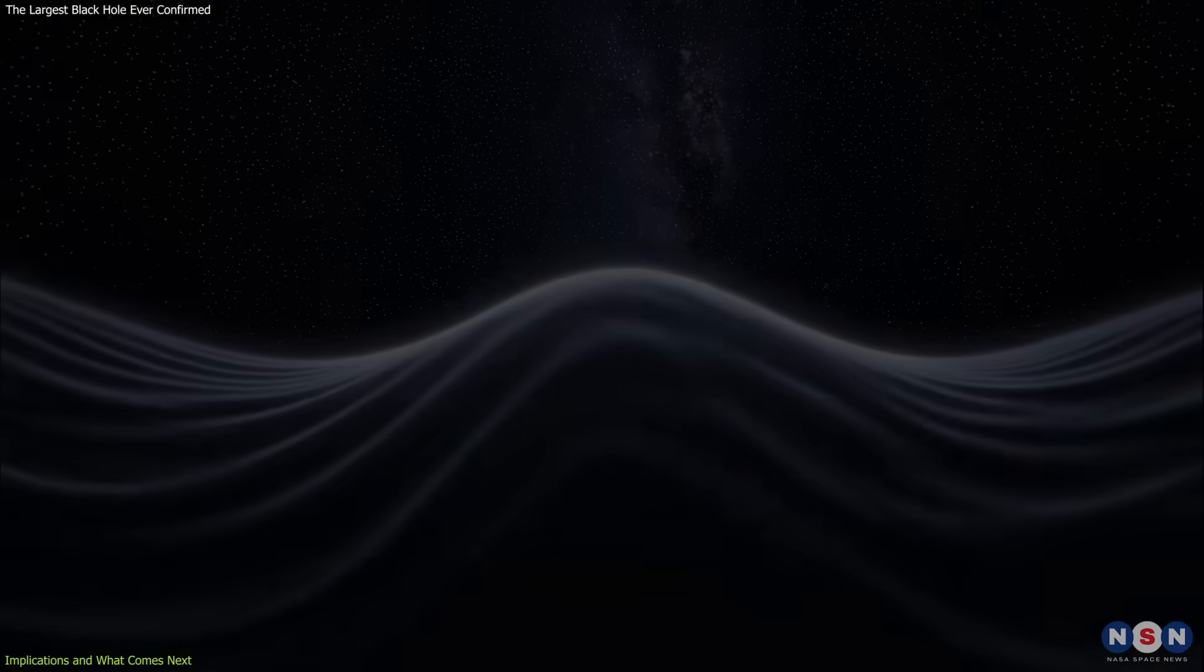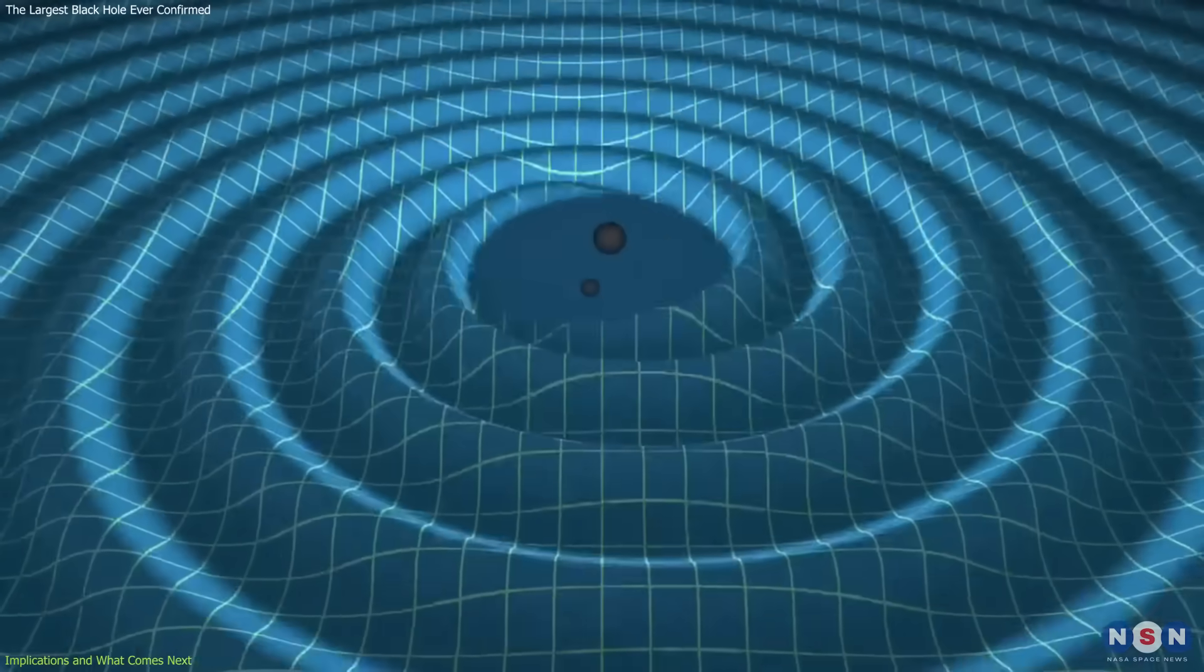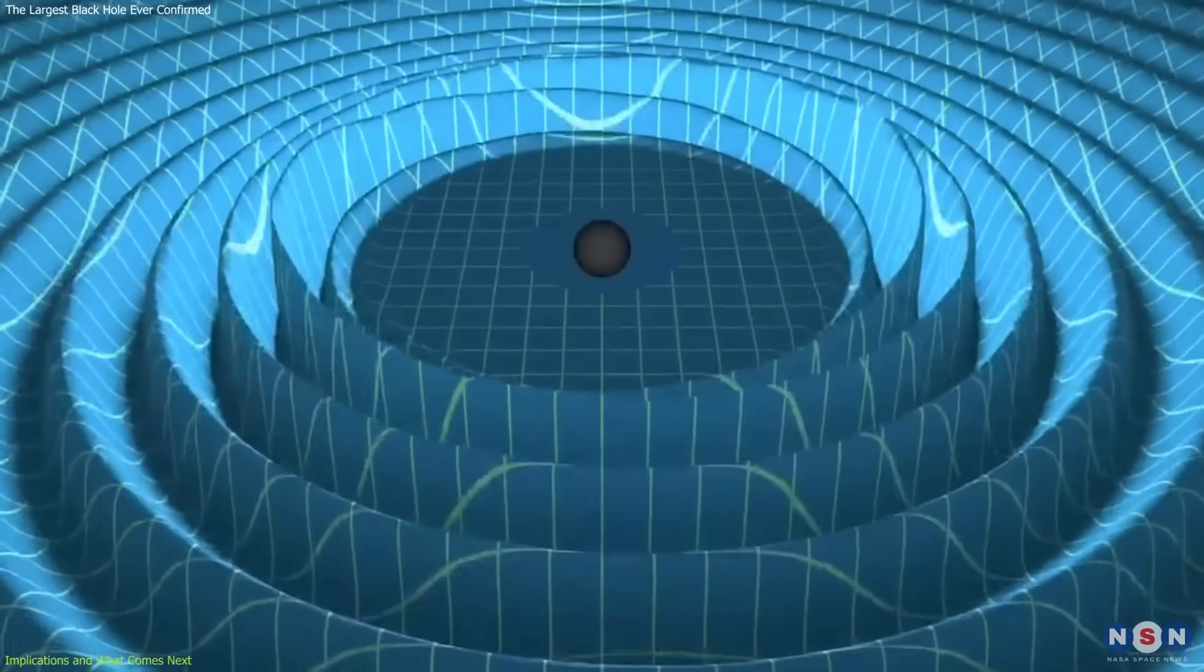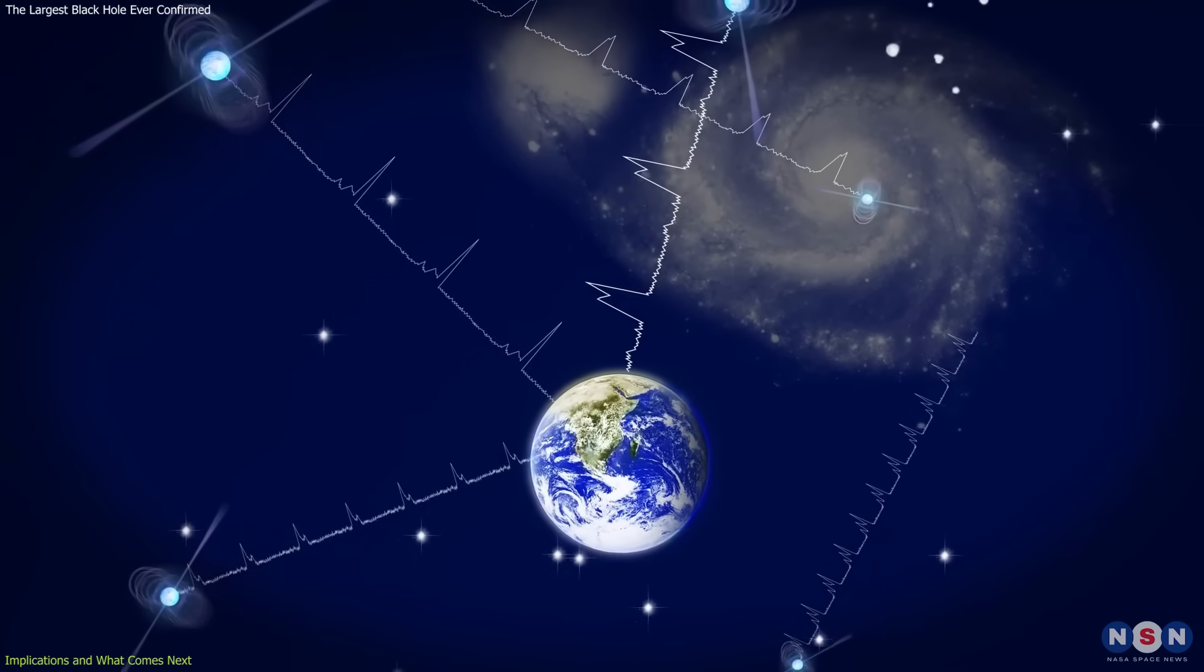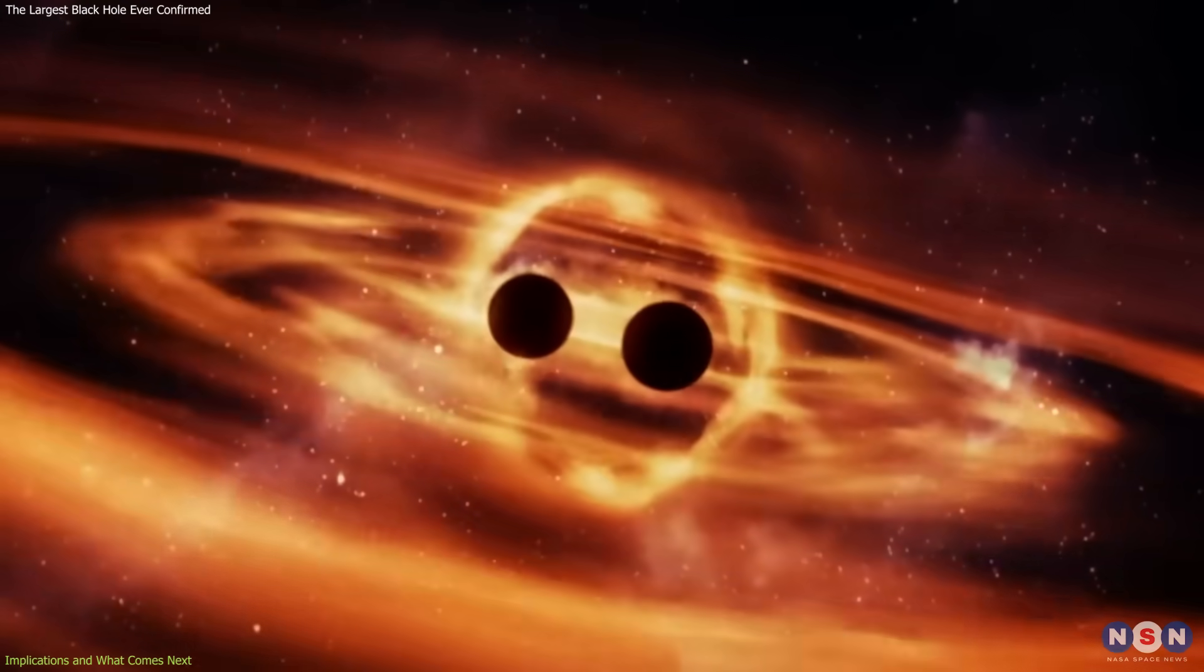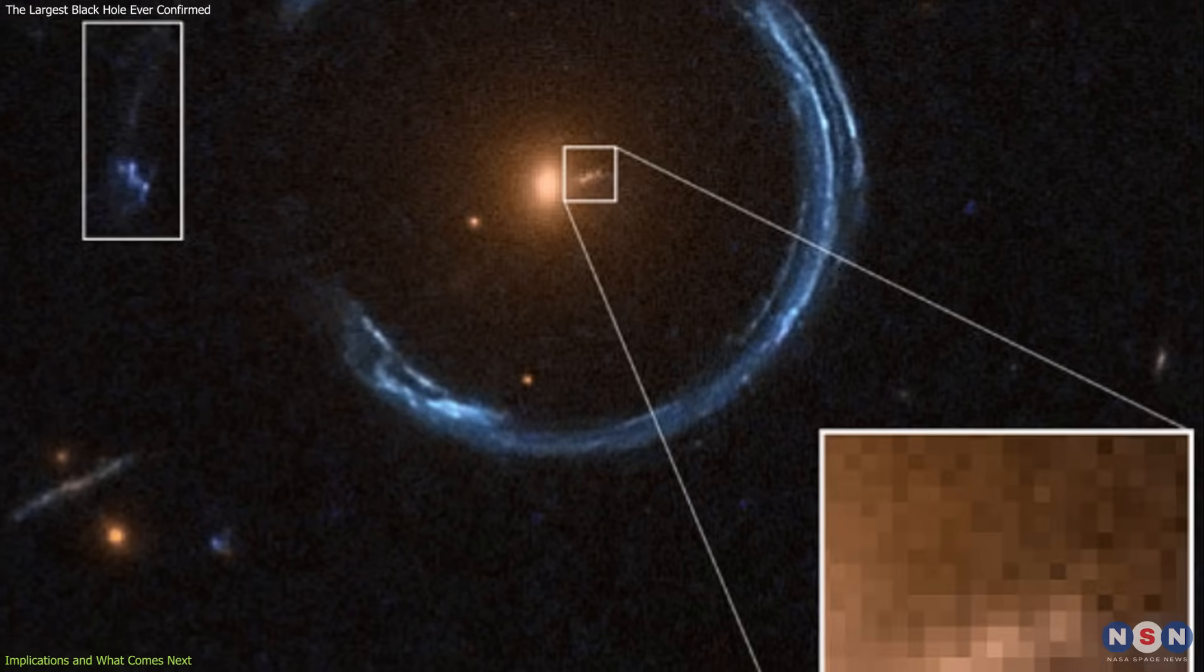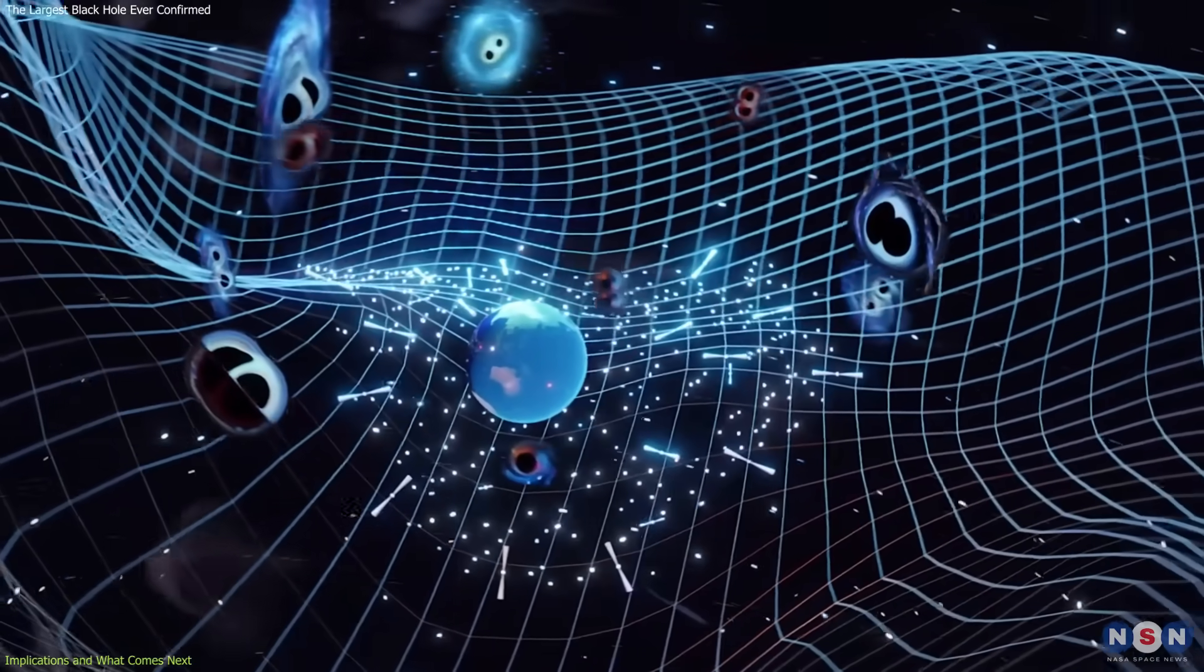This also connects to the field of gravitational wave astronomy. When two supermassive holes merge, they release low-frequency gravitational waves. Instruments such as pulsar timing arrays have already begun detecting the background hum of these cosmic events. These, like the one in the cosmic horseshoe, represent the types of objects likely contributing to this signal.